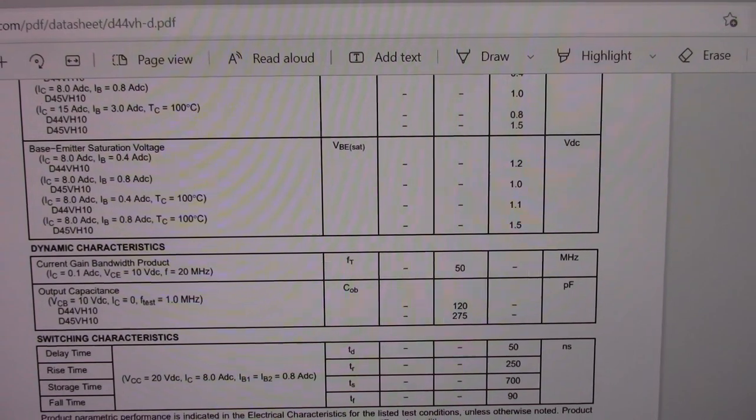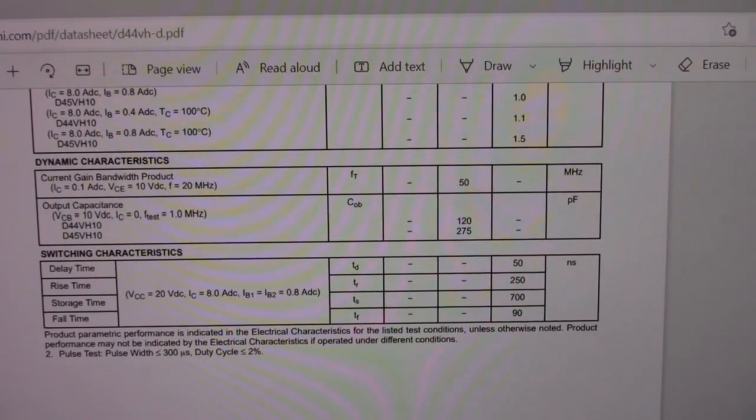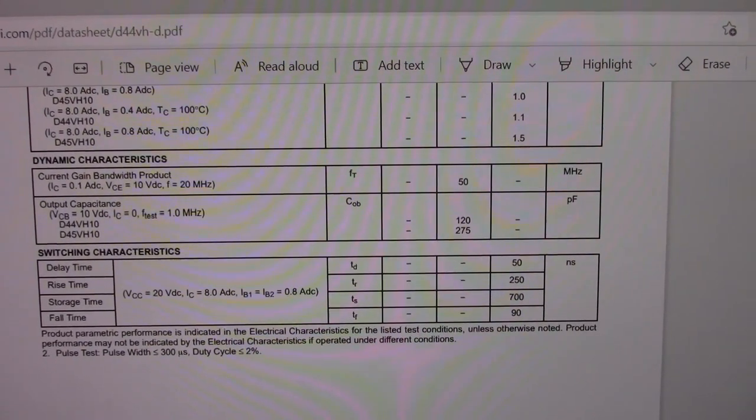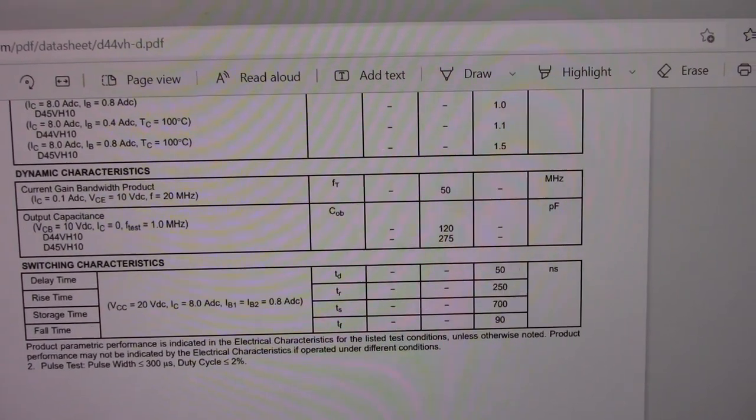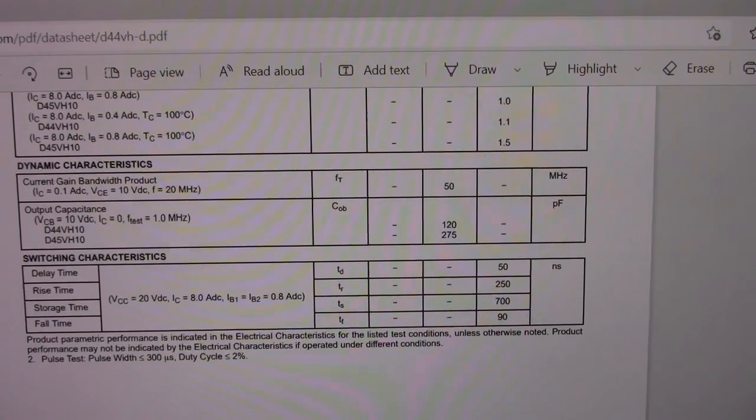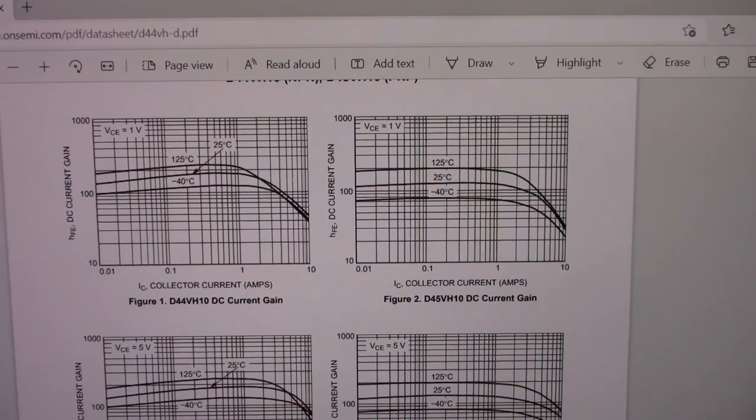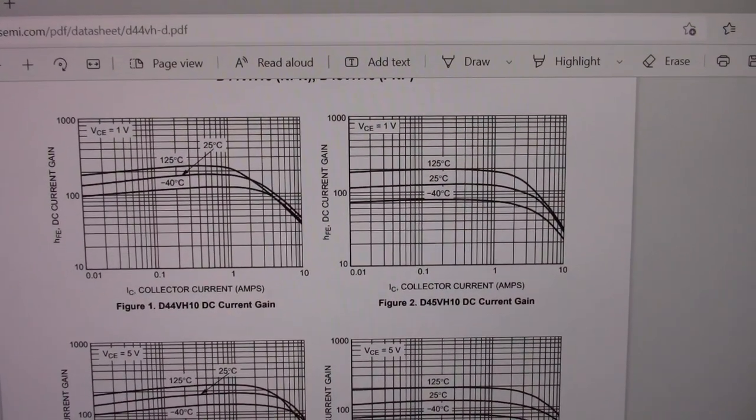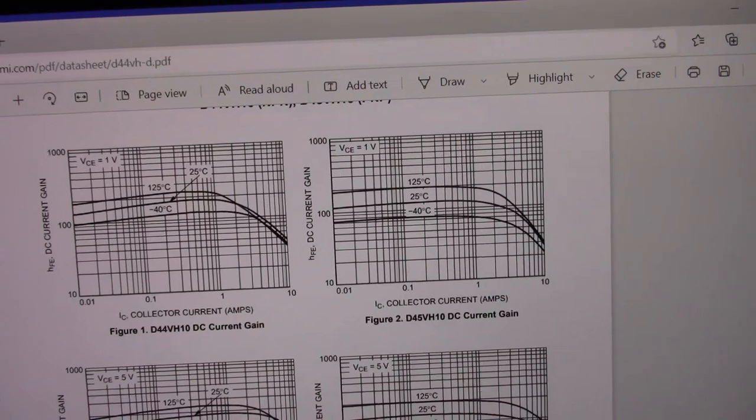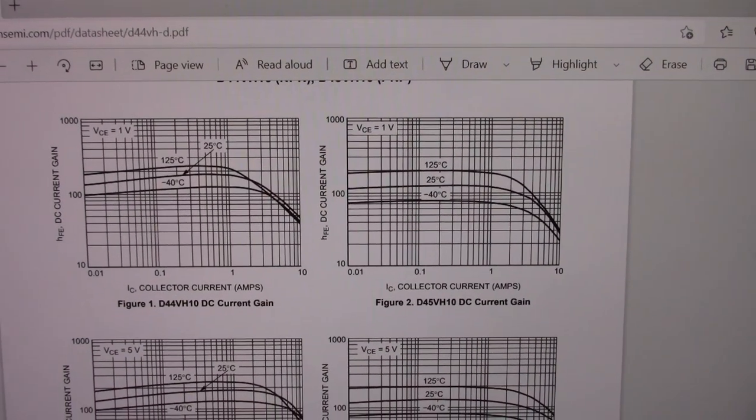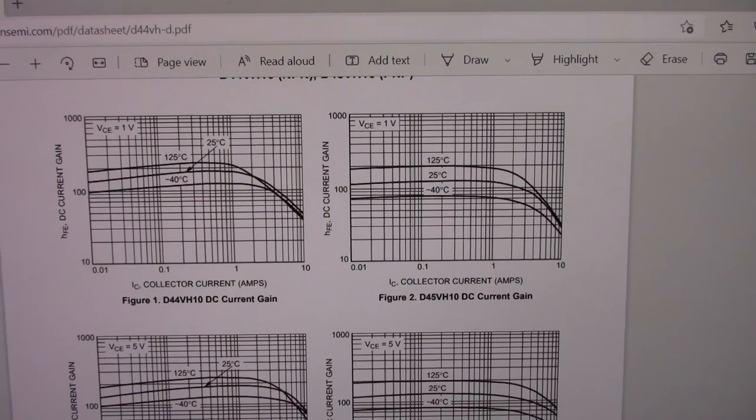50 megahertz FT. They're pretty fast transistors. The output capacitance is pretty good as well. 120 pico farads and 275 for the PNP version. But still, that's quite a bit lower than usual. This is what I like to see here. The current gain over the various collector currents. You can see that they have a nice linear characteristic. Great for audio. You see that a lot with the audio specific transistors.